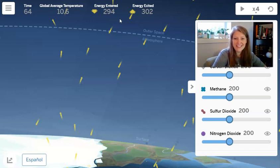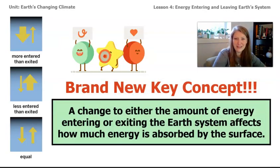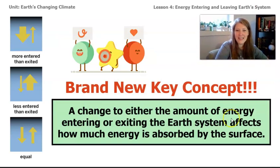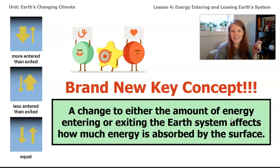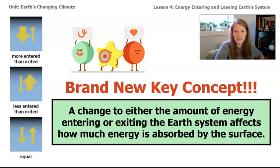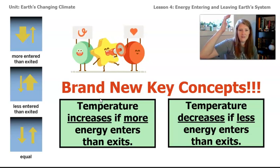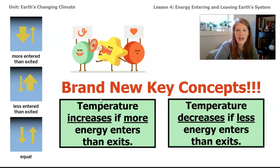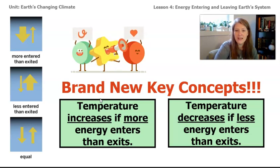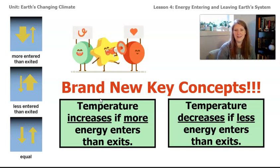This is a brand new key concept we've just learned for this unit: a change to either the amount of energy entering or exiting the system can affect how much energy is absorbed by the surface. This can be broken down into two smaller key concepts: temperature increases if more energy enters than exits, and temperature decreases if less energy enters than exits.